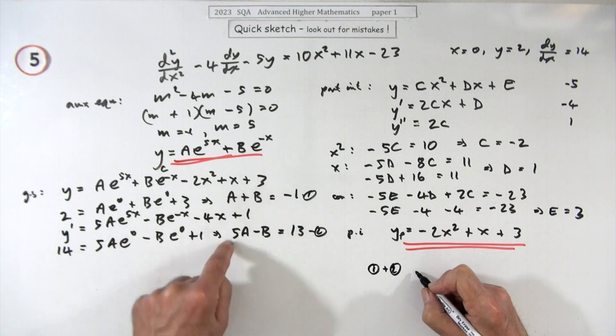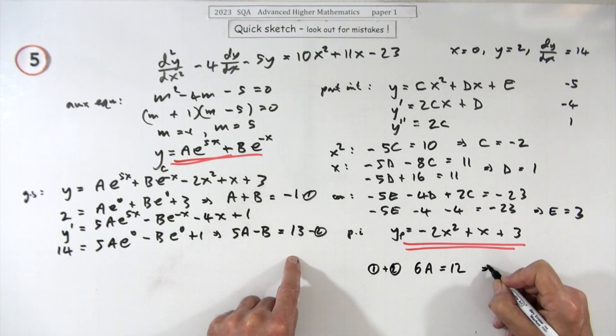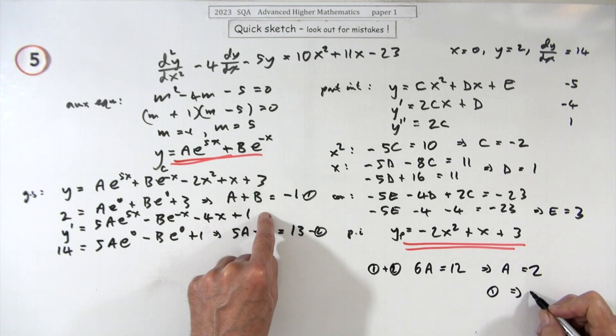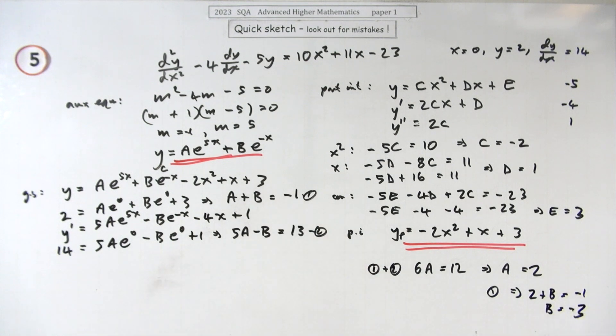1 plus 2 means you've got 6a, they disappear, equals 12, so that means a is 2. And then putting that into, I'll just put it here, putting it into number 1 means that you've got 2 plus b equals negative 1, so b must equal negative 3.